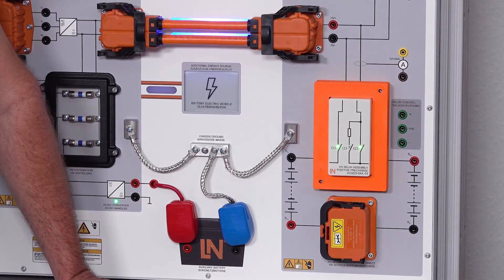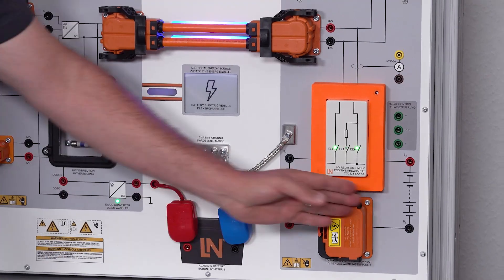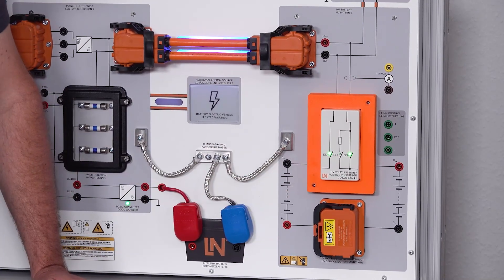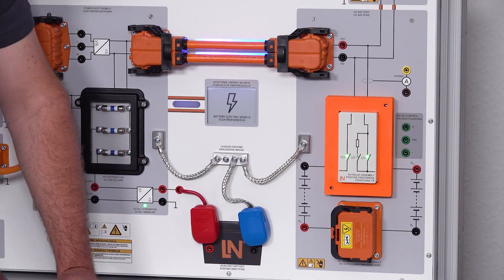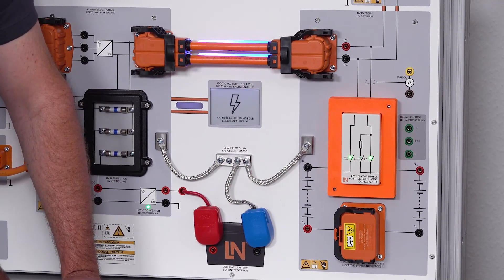With our manual service disconnect right at the bottom here, that's keeping the two modules connected. If we remove the manual service disconnect we've got then two modules of 200 volts each.